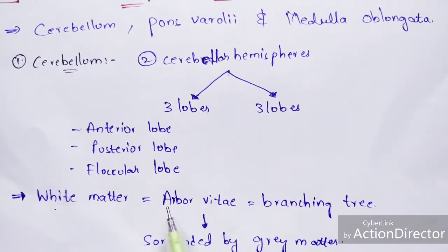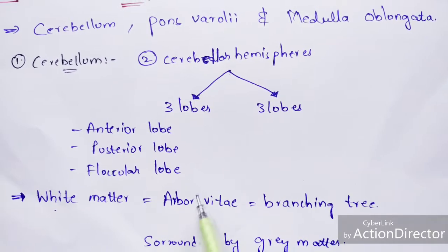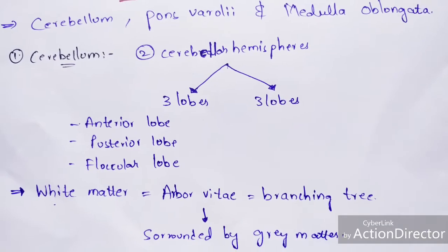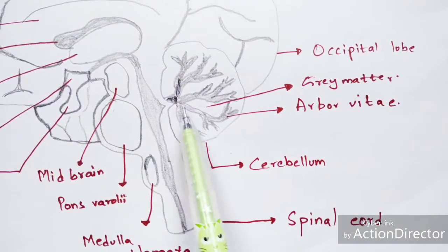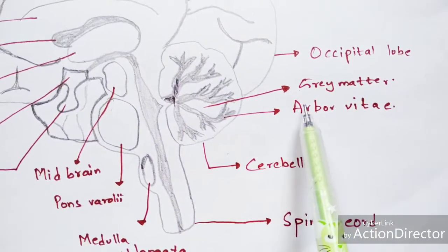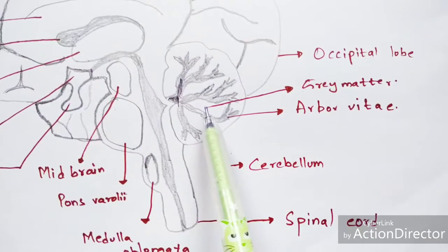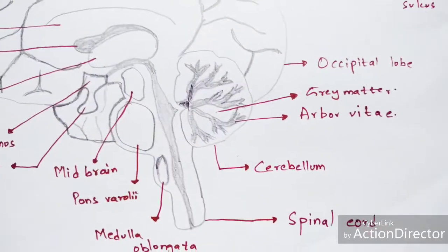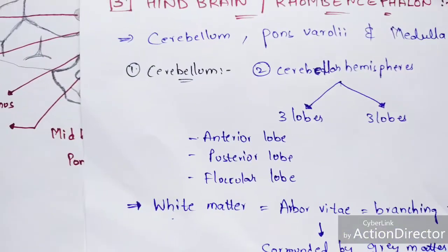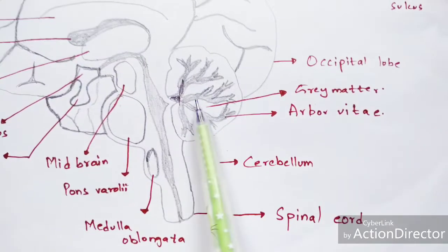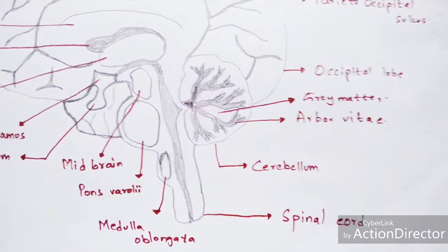The white matter of the cerebellum is called the arbor vitae, which occurs in a branching tree pattern. The gray matter surrounds the arbor vitae. So in the cerebellum, the arbor vitae is the white matter and the surrounding region is the gray matter.